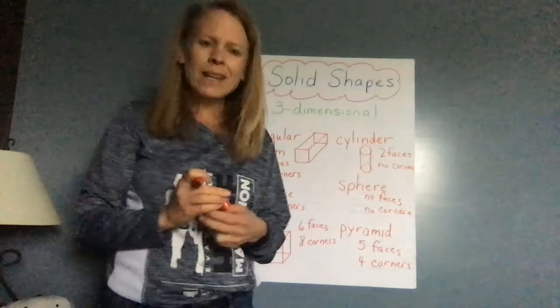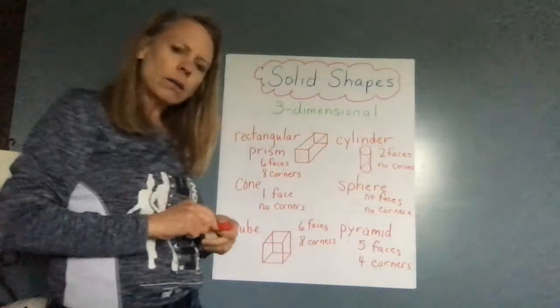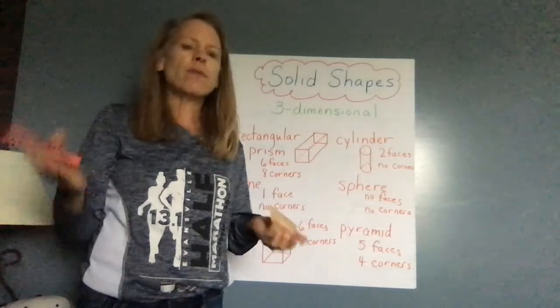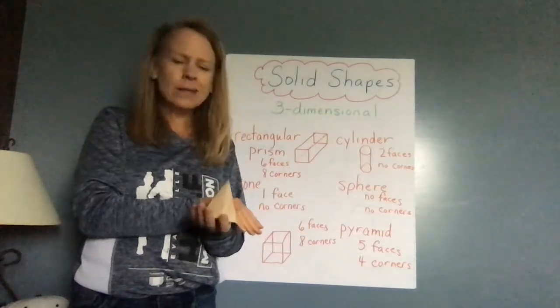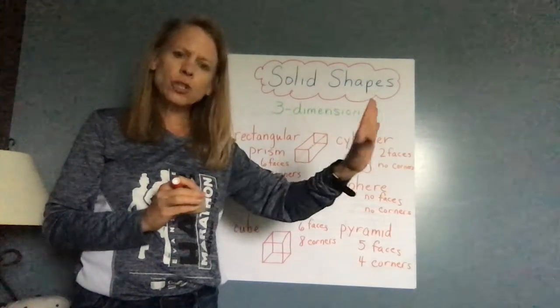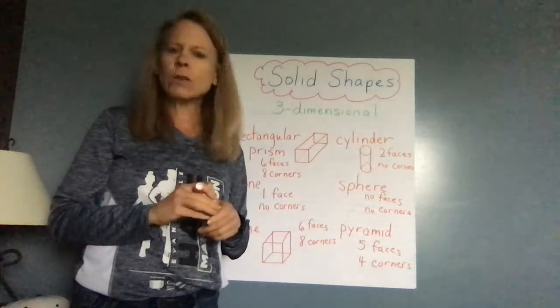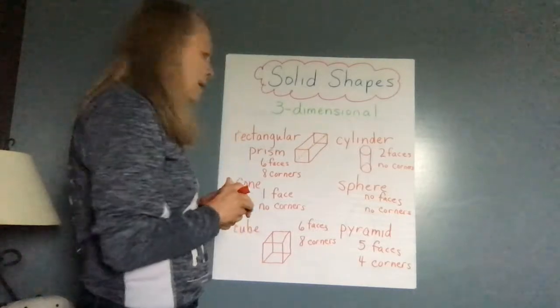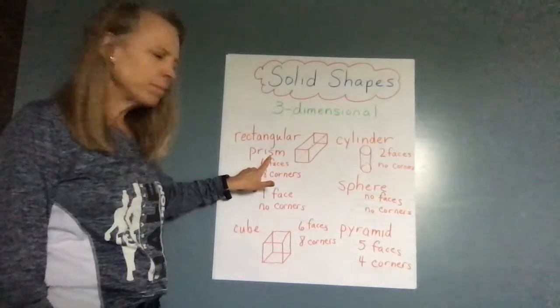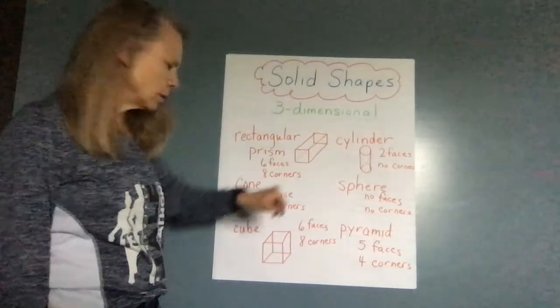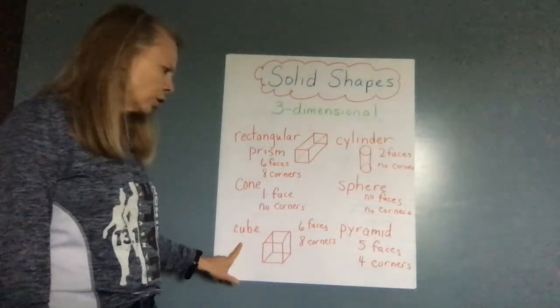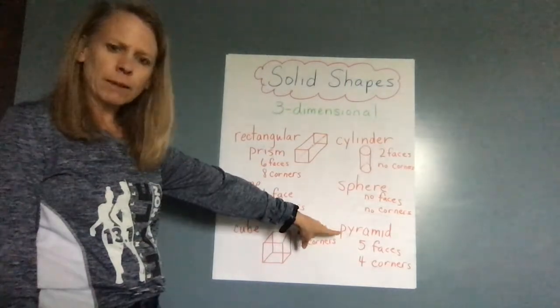So these are called solid shapes. They take up space. If I cover them with a blanket or a towel, you can tell they're there. And like the plane shapes we talked about yesterday, that they're flat. The examples that we talked about, rectangular prism, a cylinder, a cone, sphere, a cube, and a pyramid.